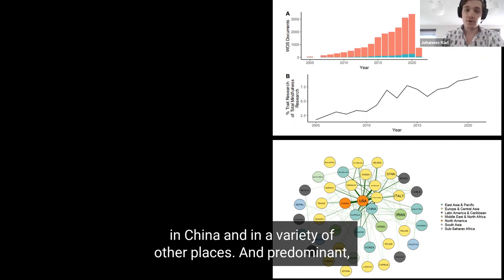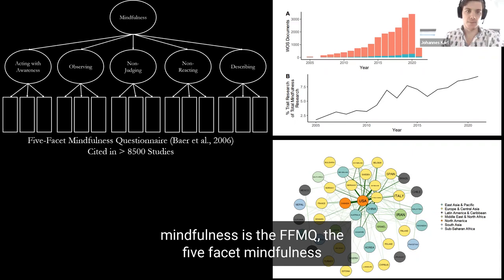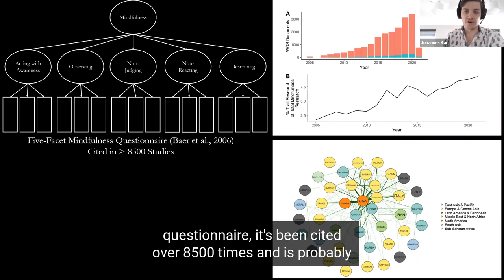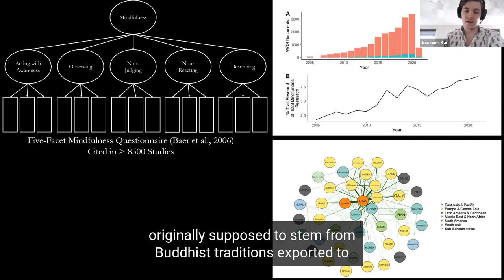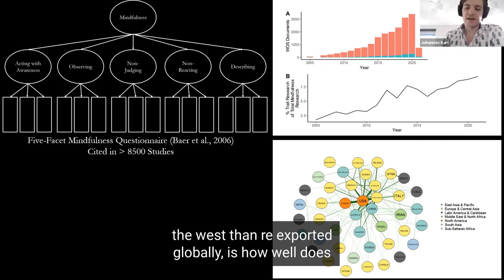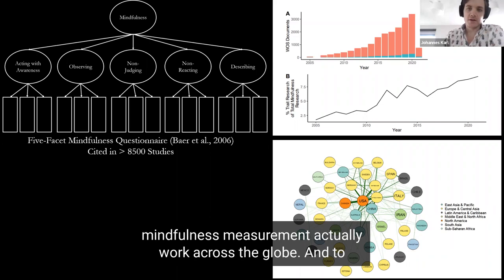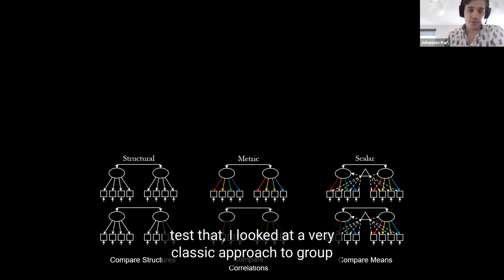Predominant amongst the multifaceted measurements of mindfulness is the FFMQ, the Five Facet Mindfulness Questionnaire. It's been cited over 8,500 times and is probably the most common multifaceted measure. One of the things that really interested me is, given that mindfulness was originally supposed to stem from Buddhist traditions, exported to the West and re-exported globally, how well does mindfulness measurement actually work across the globe? To test that I looked at a very classic approach to group equivalence, taking the levels of structural, metric, and scalar equivalence.